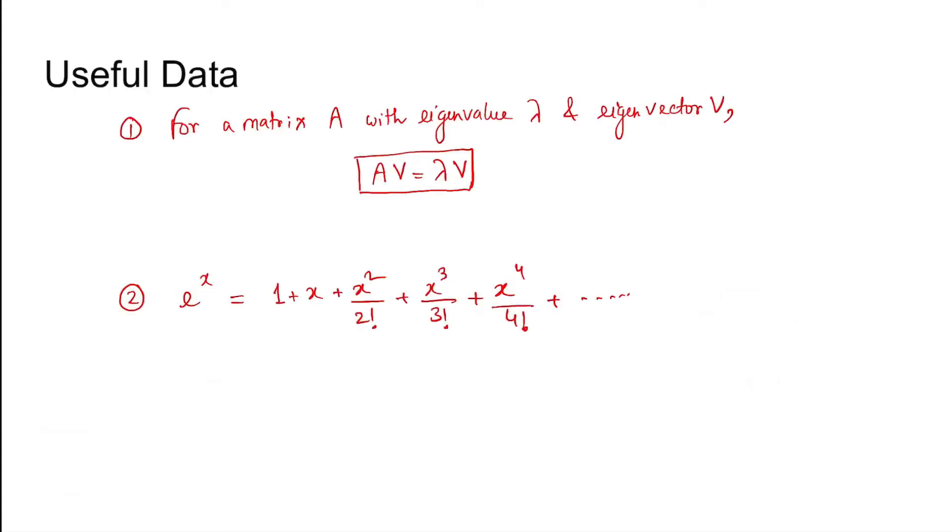The useful data is that given for a matrix A with eigenvalue lambda and V, then A into V equals lambda into V. And E to the power X during the series expansion, we get 1 plus X plus X squared by 2 factorial plus X cubed by 3 factorial and so on.